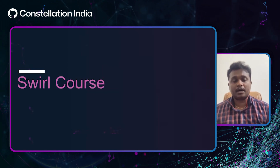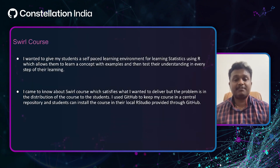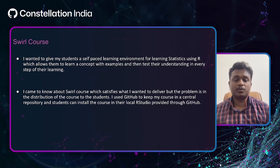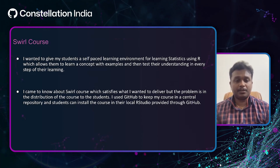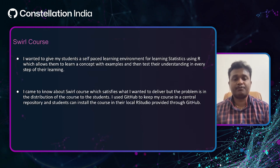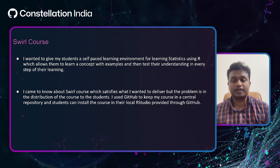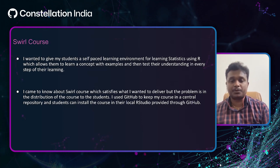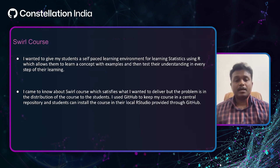The third best practice was a Swirl course. I had to teach statistics using R, and I wanted to give students a self-paced learning environment where they could do the course on their own. I came to know about Swirl course to deliver this, but the problem was distribution. I used GitHub to keep my course in a central repository so students could directly install the course in their local RStudio — an IDE used to run R commands and create projects.